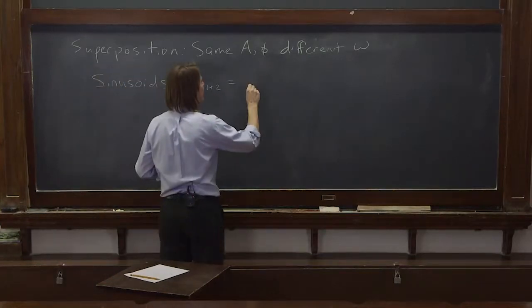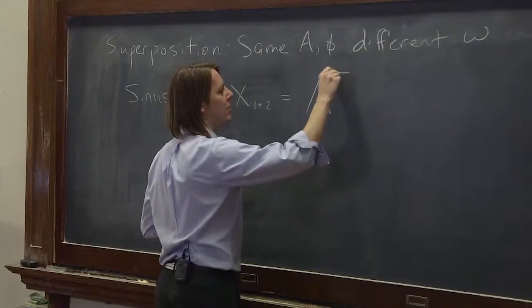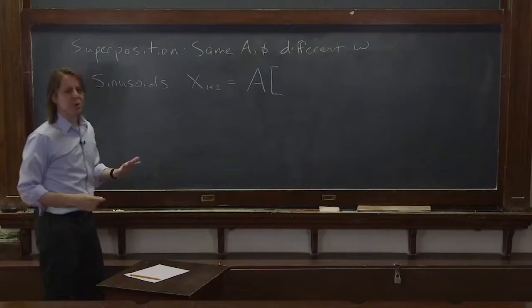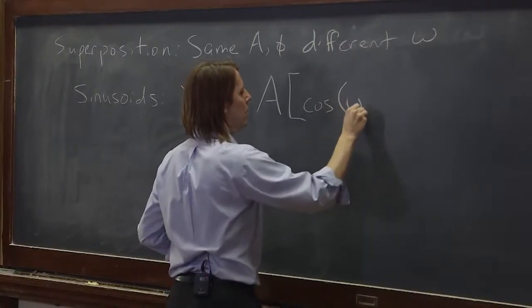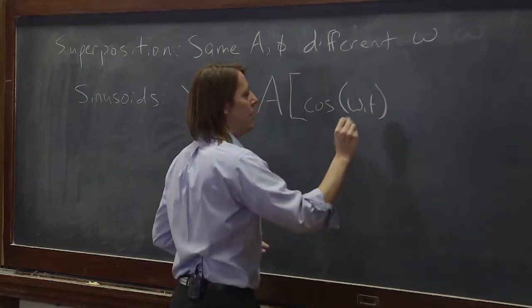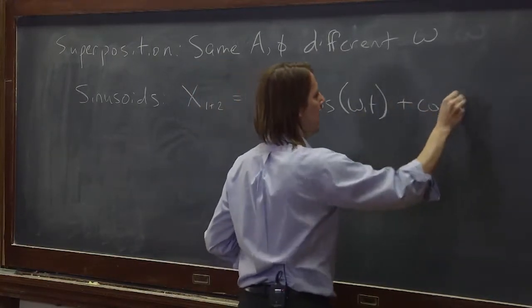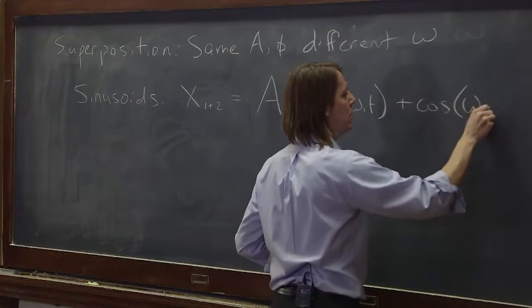So they have the same amplitude. So in the sum, the amplitude could come out. And we'll use cosines. So we would have the cosine of one of them and plus the cosine of the other one, omega 2t.